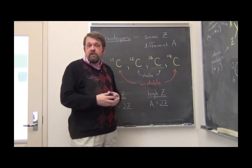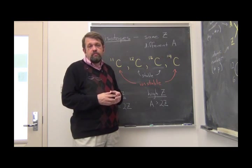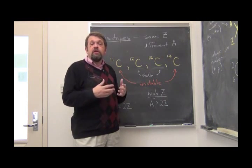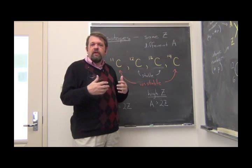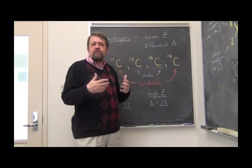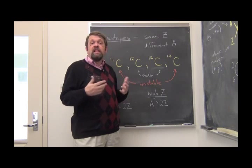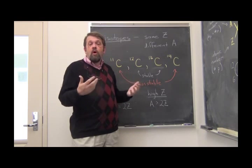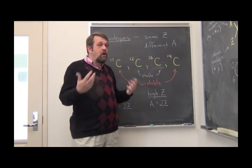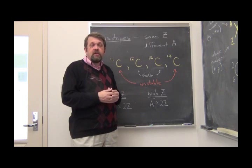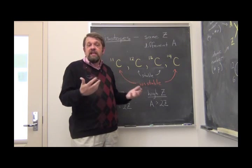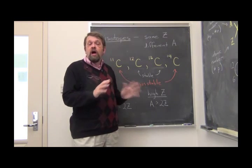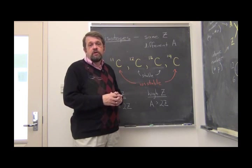But that rule of thumb changes once Z gets to be a higher number, higher than about 20. Then the atomic number needs to be more, or the mass number needs to be more than twice the atomic number. And that means that the number of neutrons needs to be more, perhaps substantially more, than the number of protons for the nucleus to be stable. For very heavy nuclei, there are no stable isotopes. The heaviest stable isotope is lead, which has an atomic number of 82. Things more massive than this, things with more protons in the nucleus than this, like uranium with 92 protons, are unstable. All of the isotopes are unstable.